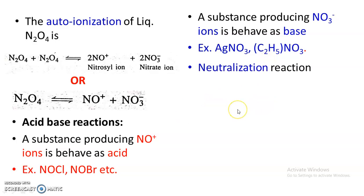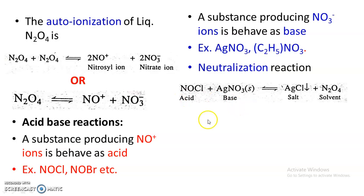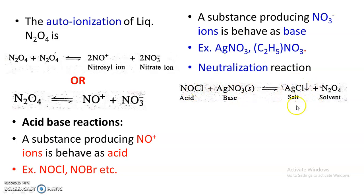The representative neutralization reaction in liquid dinitrogen tetroxide: NOCl is an acid because it produces NO⁺, and AgNO3 (silver nitrate) is a base because it produces NO3⁻. When acid reacts with base, there is formation of AgCl salt (silver chloride) plus the solvent N2O4. This is the neutralization reaction in dinitrogen tetroxide solvent.